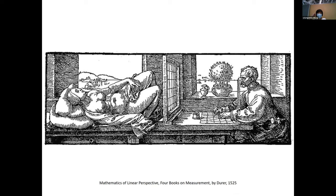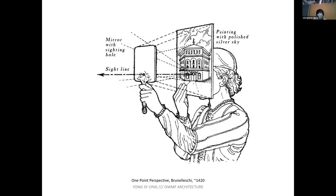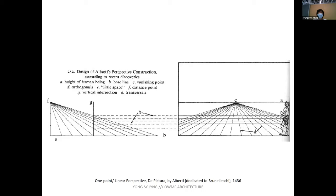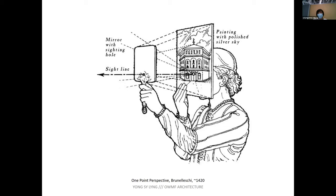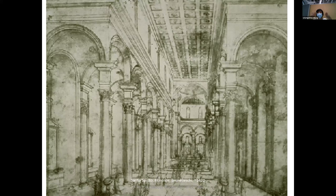This is also related to the invention of perspective by Brunelleschi, who invented a way to mathematically construct perspectives. This is a one-point perspective, used in both Renaissance painting and architectural representation, because it reflects the architecture of the time — symmetry, with everything pointing to one point. Brunelleschi's drawing is spiritual, but this one-point perspective is slightly tilted to one side, reflecting his character of always trying to invent things.